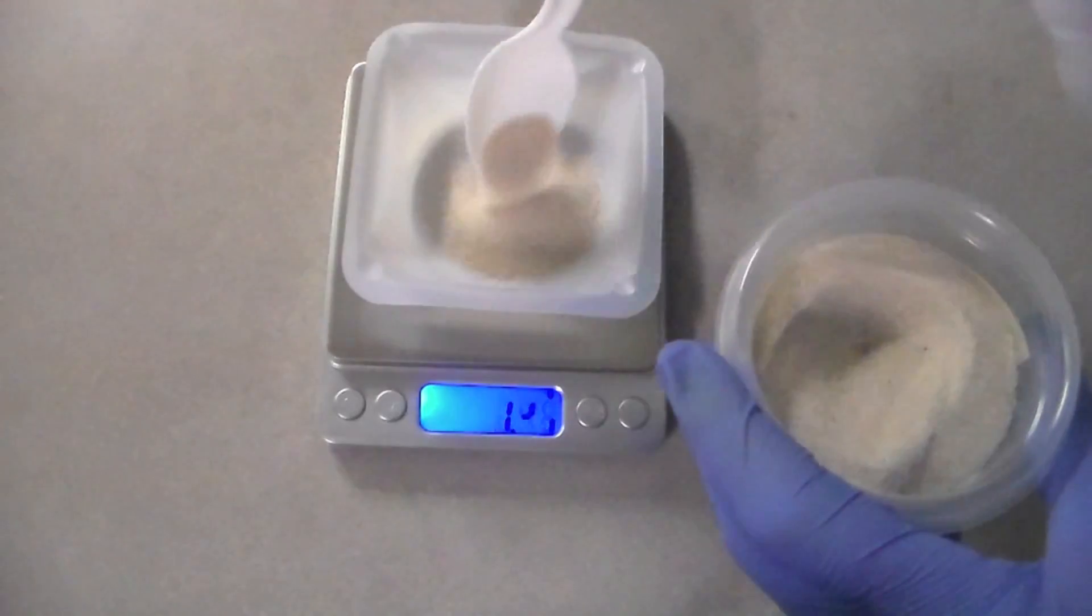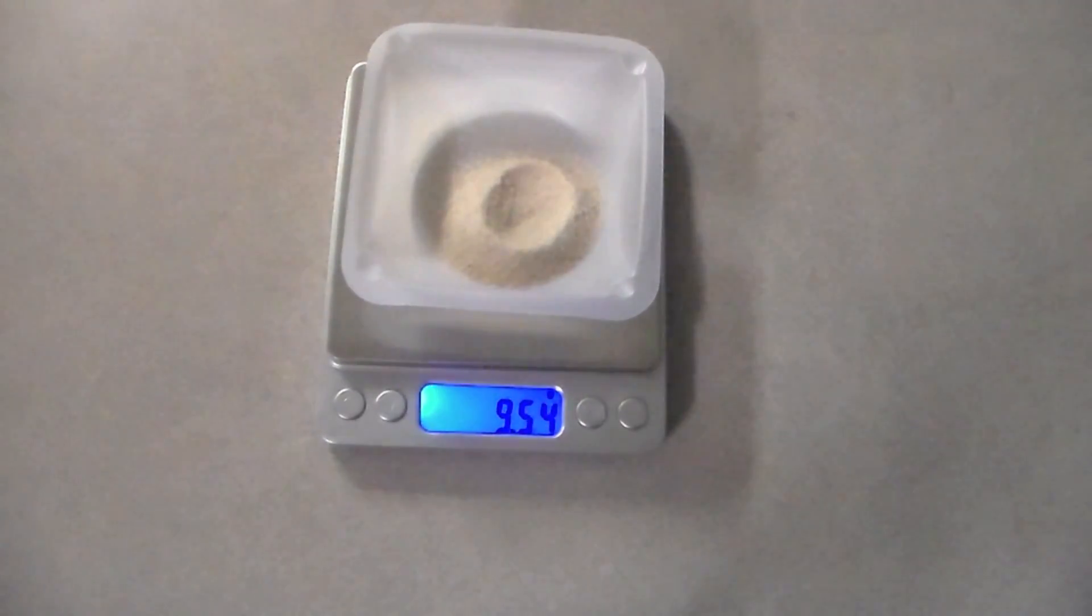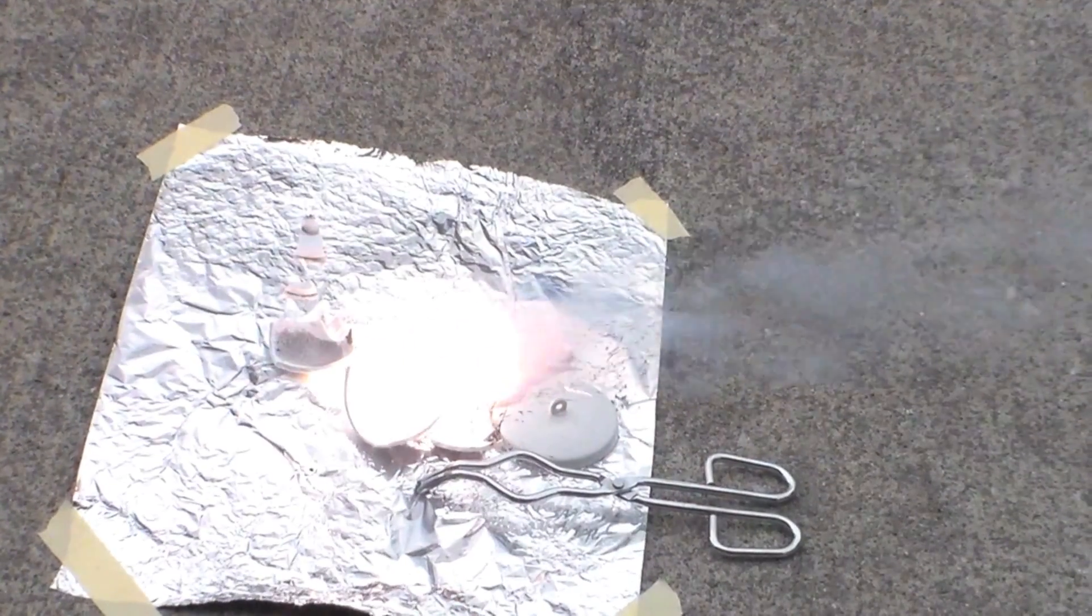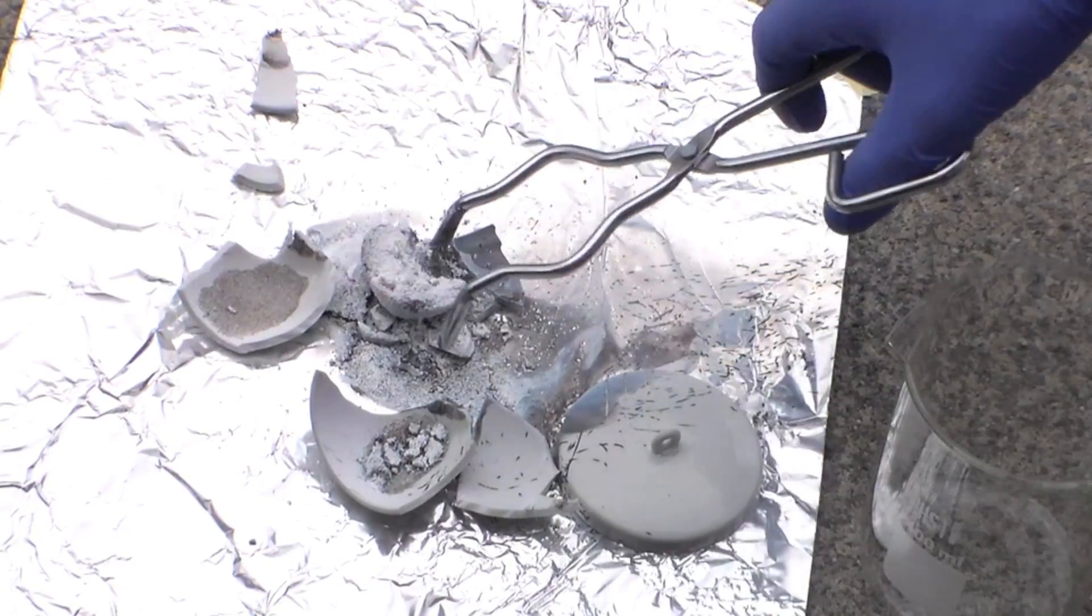I figured that by instead using an excess of silicon dioxide, we could prevent the silicon formed from reacting with excess magnesium. Thus, we should theoretically be left with some silicon in the products.